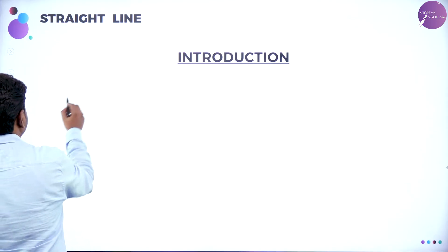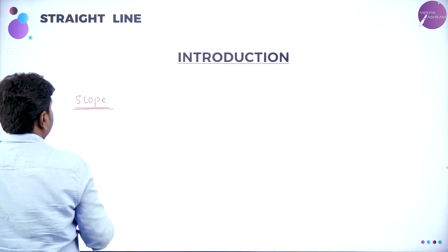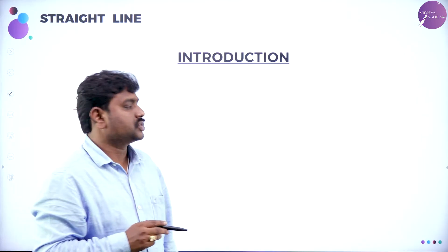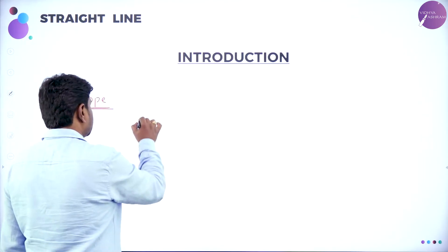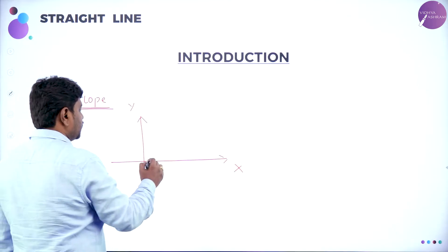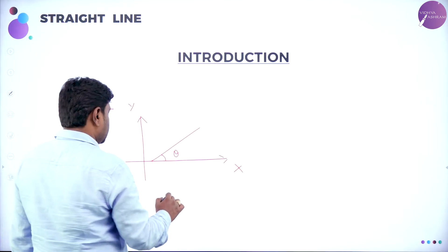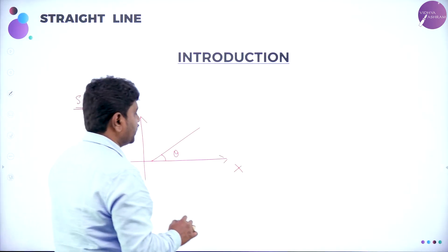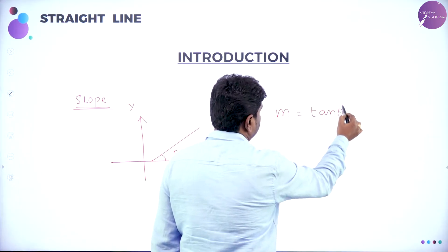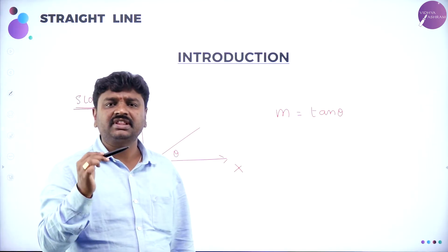The first parameter to draw a line is slope. So now what I am discussing is slope of a line — the very first condition. If you take any line, suppose this is X-axis and this is Y-axis, the line is making an angle theta with X-axis. If you want to find slope of the line, use the formula: M is equal to tan theta. Slope of the line is the tangent of angle made by the line with X-axis.